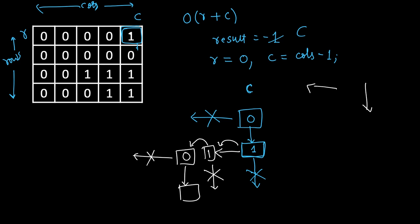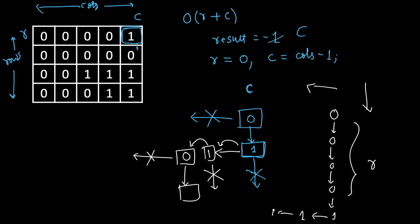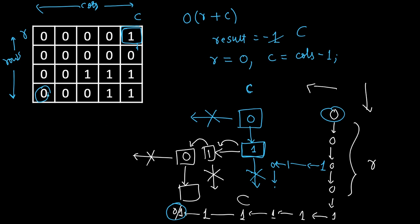The worst case is R+C. For example, if everything is zero you traverse all R rows downward, then in the last row you find ones and traverse up to C columns leftward — total R+C moves. There can be multiple paths from the top-right to the final answer, but in all cases the total moves are bounded by R+C. On average it will be much less.